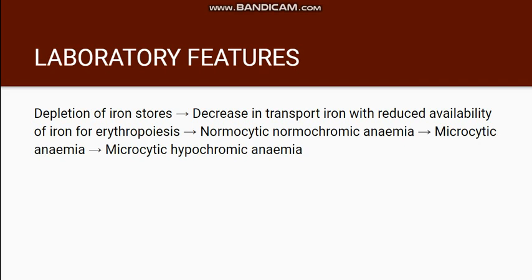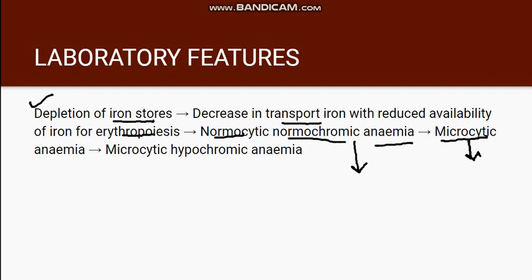Going to the laboratory features in iron deficiency anemia. Before understanding the laboratory features, we should understand that firstly there is depletion of iron stores, then there is decrease in the transport iron, and then the iron required for erythropoiesis will not be present. There will be anemia in which RBC morphology will be normal — normocytic, normochromic type of anemia. Then microcytosis will take place in which the RBC size will decrease, and lastly the characteristic anemia of iron deficiency — microcytic hypochromic anemia — will be present.